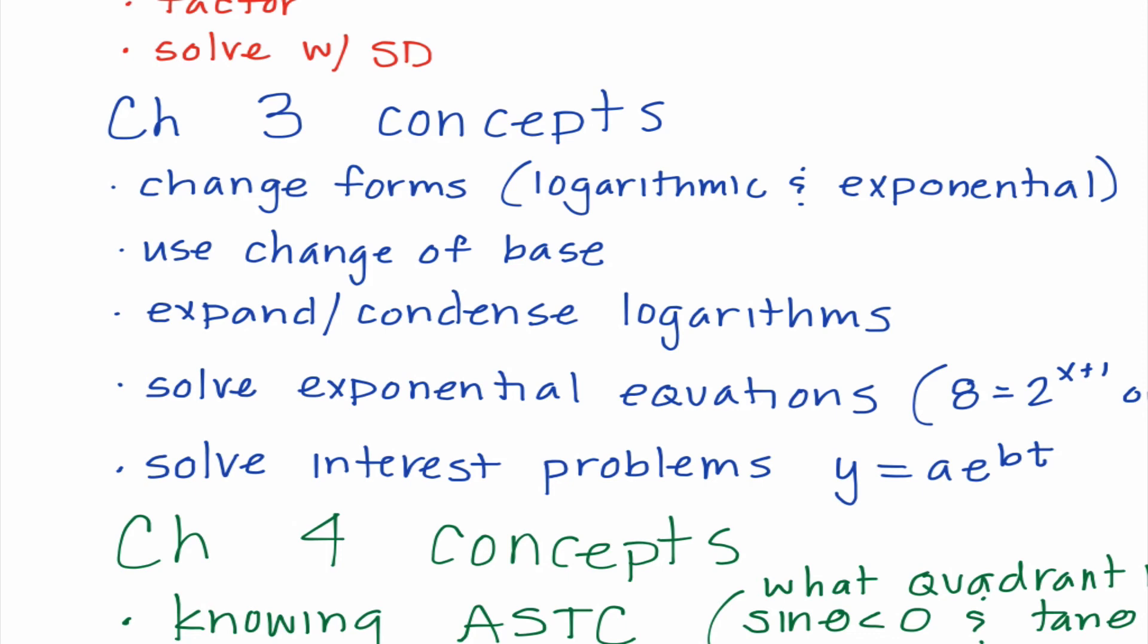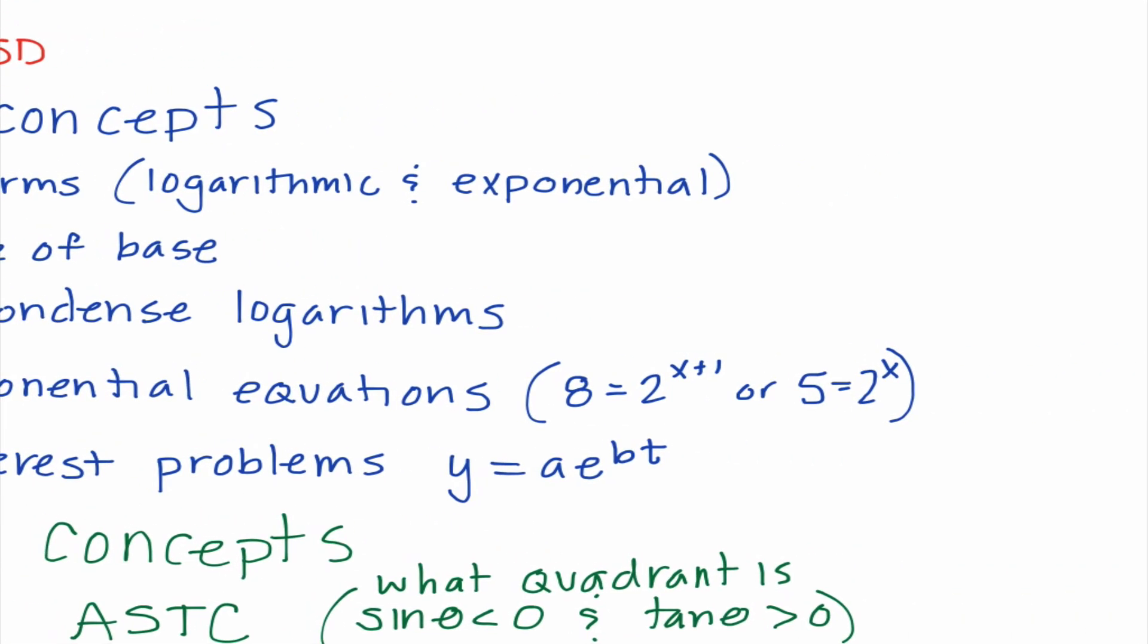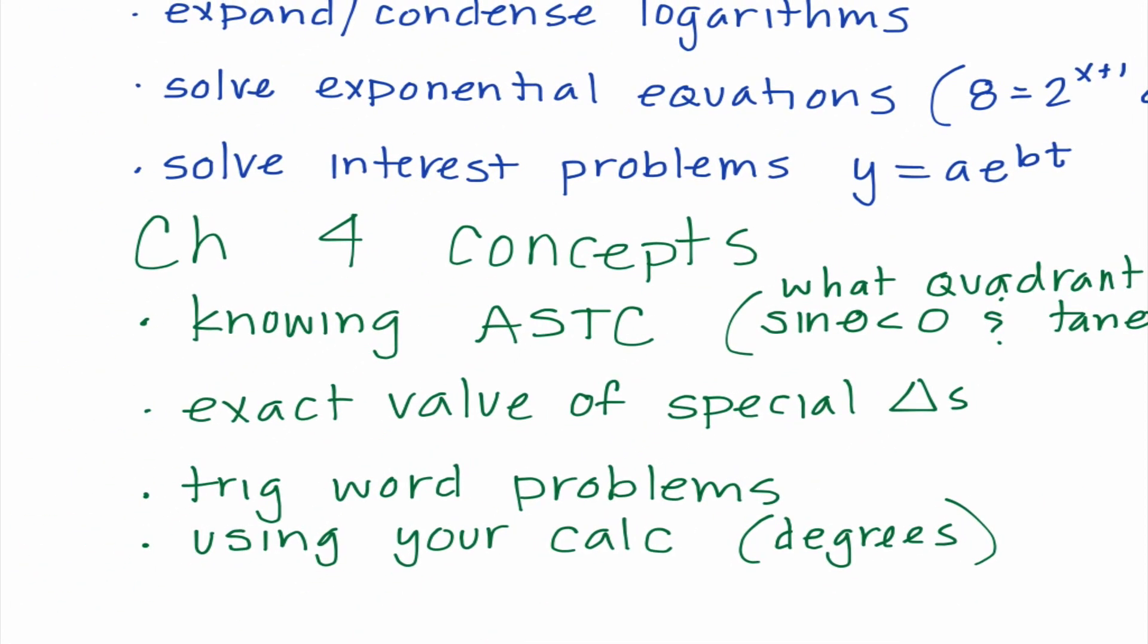We need to know how to solve exponential equations. I am giving two examples here. If we have a problem like this, we can actually write 8 as 2 to the third power and have the same base, and then I can set those exponents equal to each other. If I have something like 5 equals 2 to the x power, I would need to either take a log of both sides or change it into logarithmic form and solve from there. I'm going through this stuff pretty quickly, I just want to highlight topics. You can refer back to your notes and back to videos if you need clarification on things.